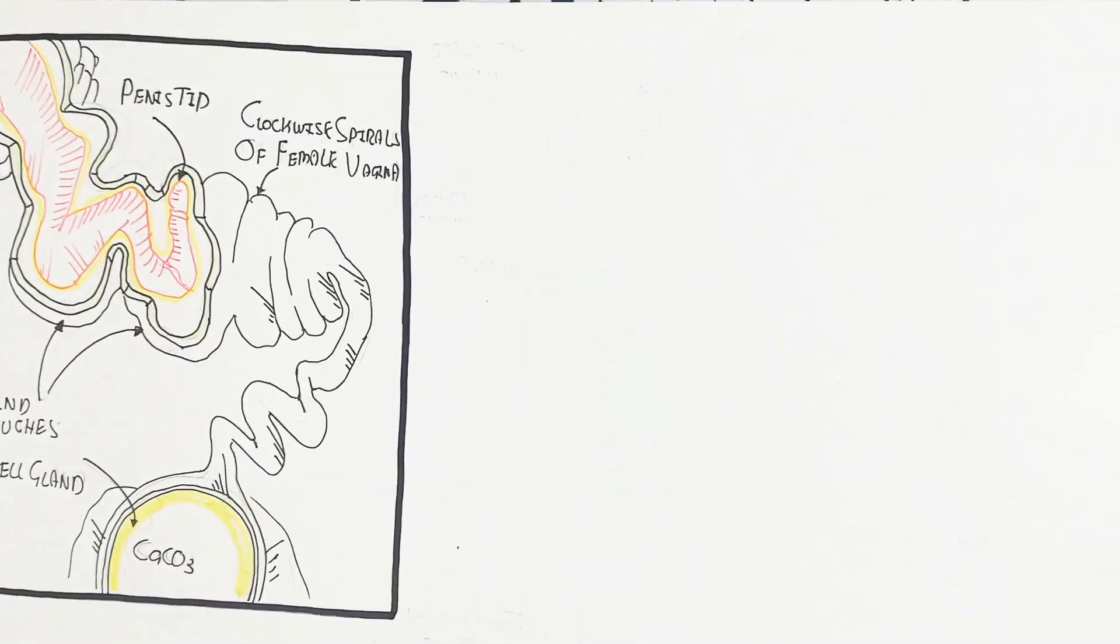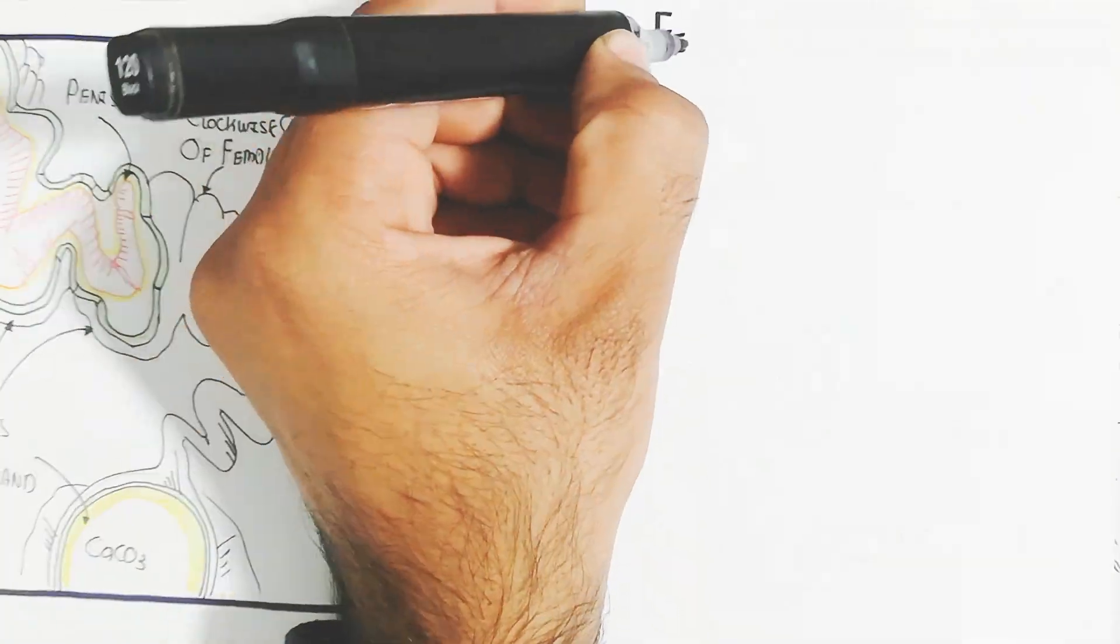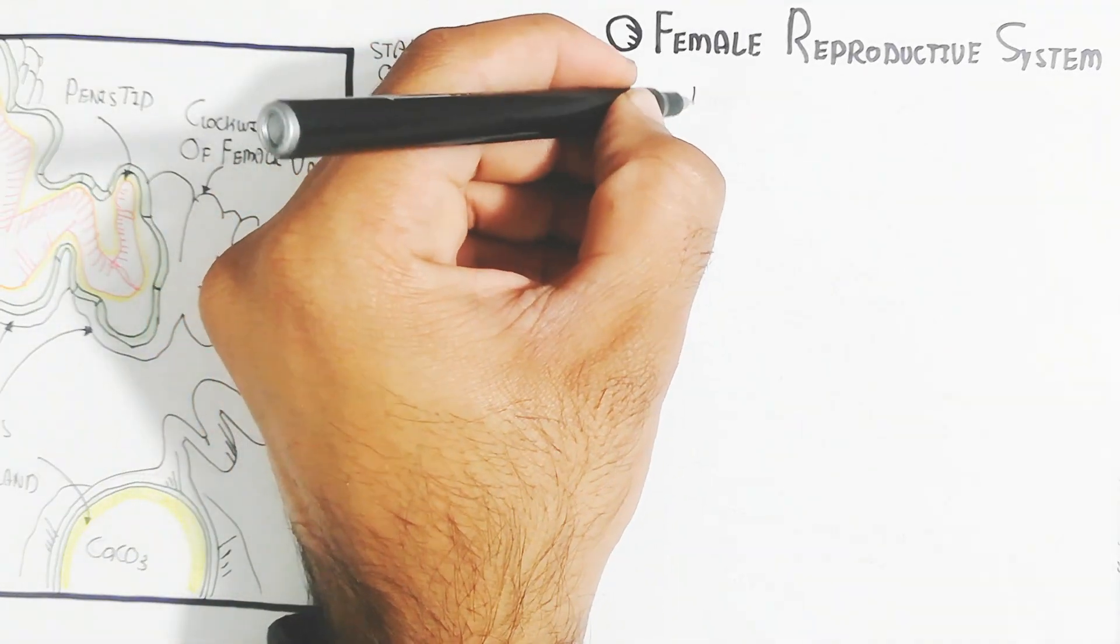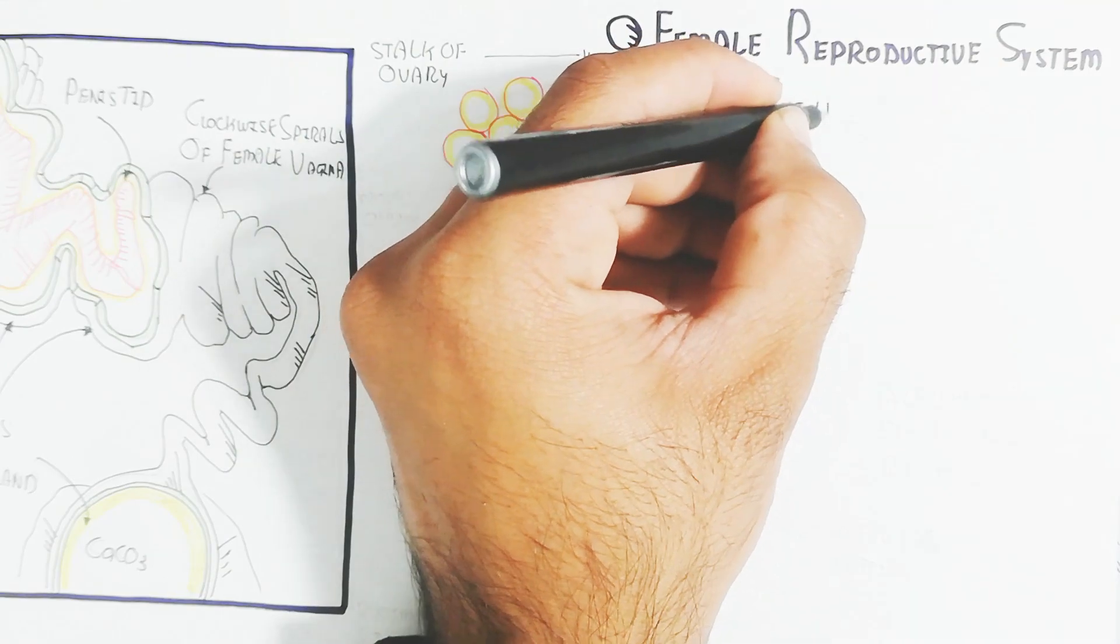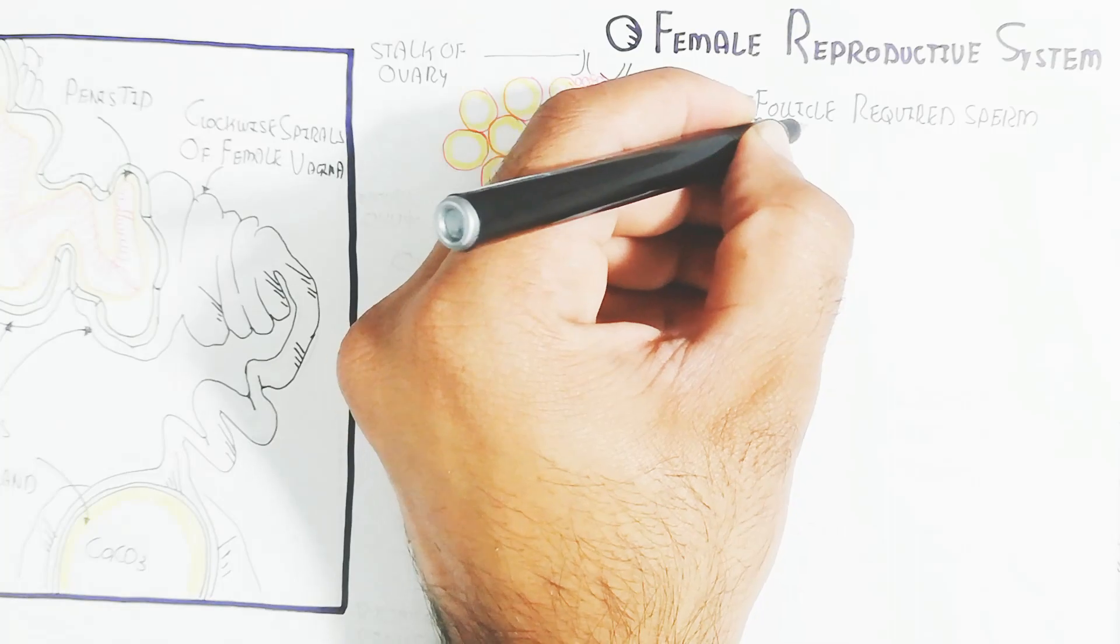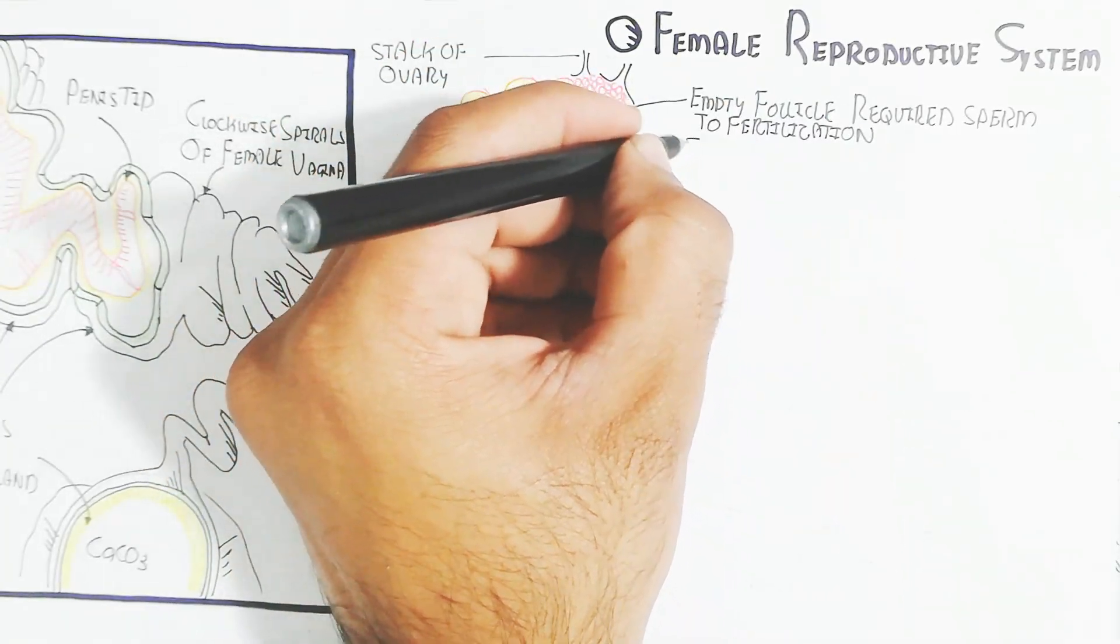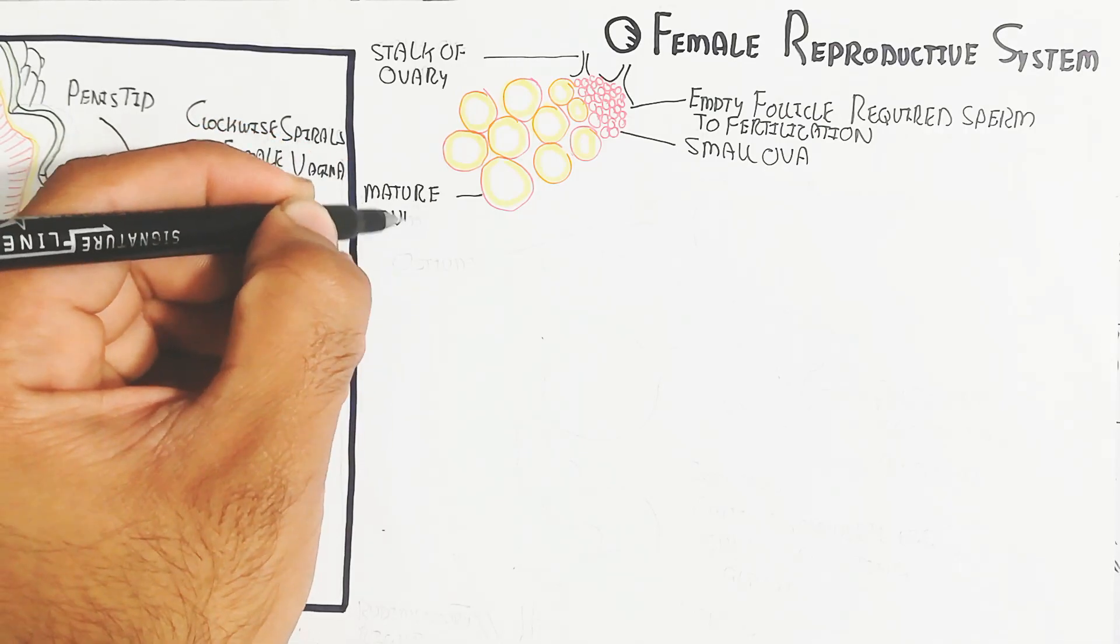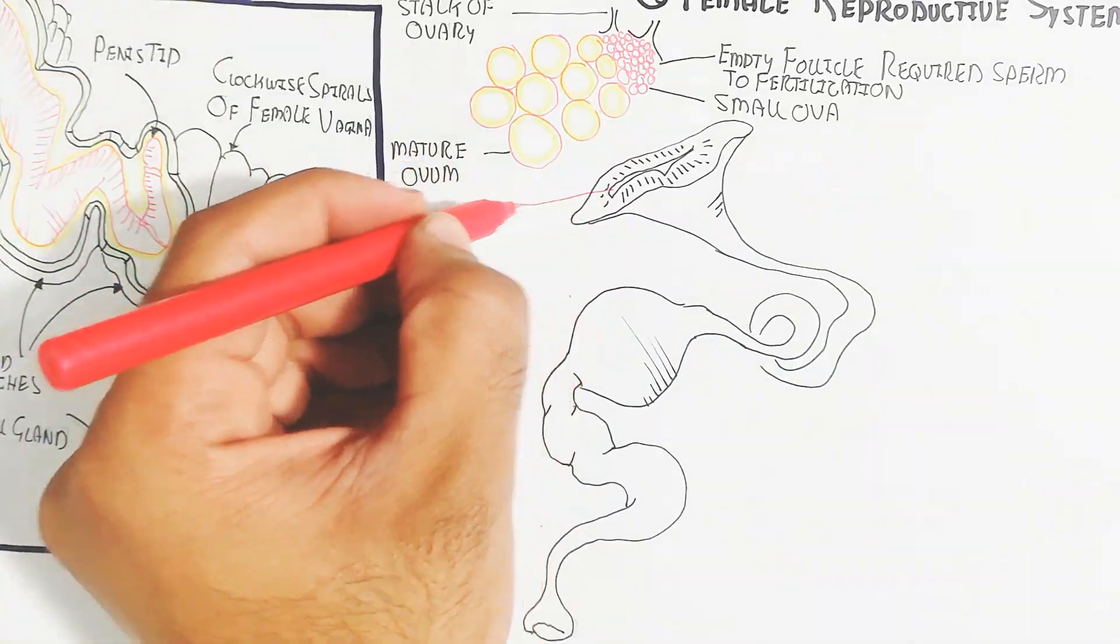Let's understand the female reproductive system of the duck. Here is the development of the follicle in the ovary. This is the stalk of ovary, the empty follicle requiring sperm for fertilization, and the small ova which will develop into mature ova.